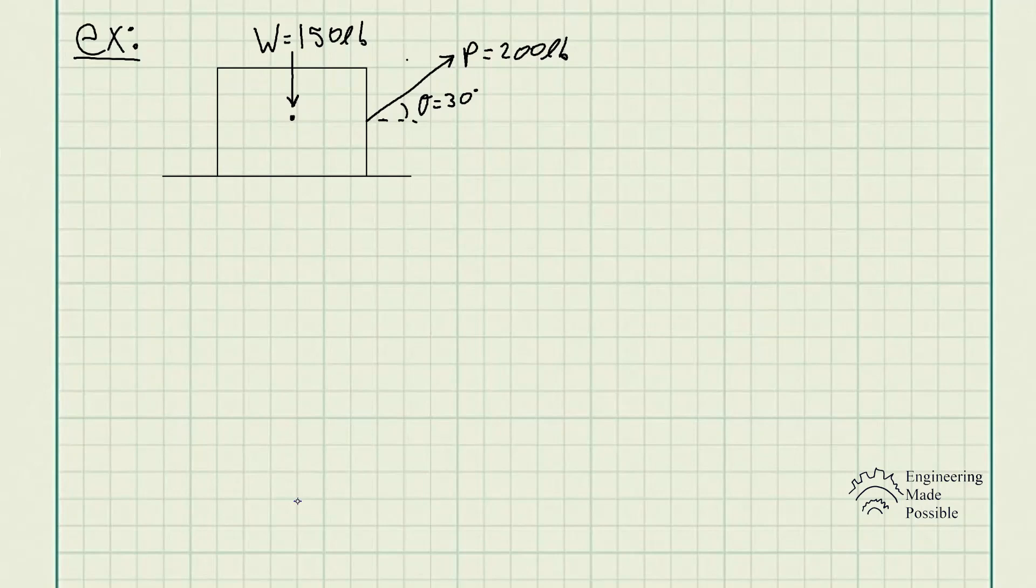For this problem, we have a crate with weight W equals 150 pounds, and the coefficients of static and kinetic friction are 0.3 and 0.2, respectively.